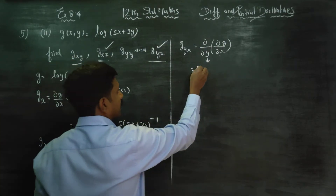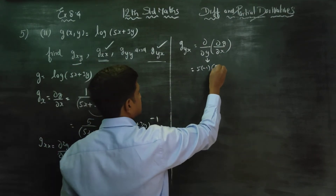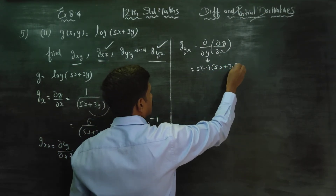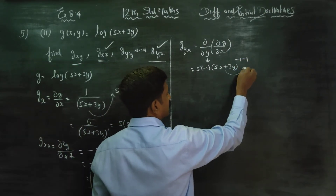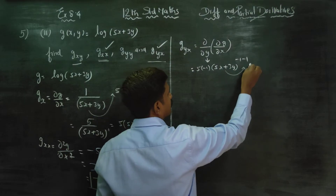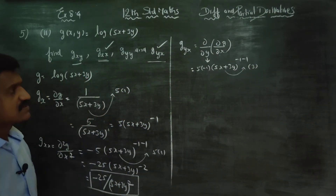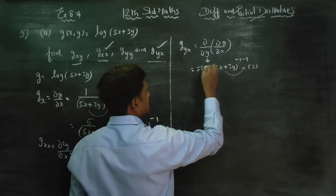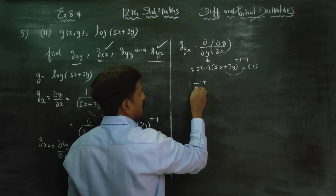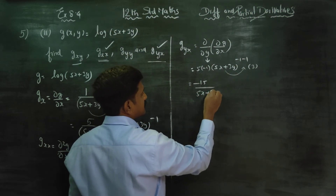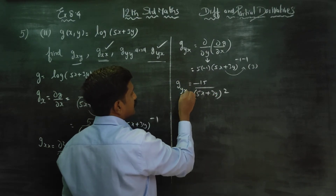Applying the power rule: 5 into minus 1, with (5x plus 3y) to power minus 1 minus 1. By chain rule, differentiate with respect to y: 3y differentiates to 3 into 1. So 5 times 3 gives minus 15, giving minus 15 by (5x plus 3y) squared. This is gyx.